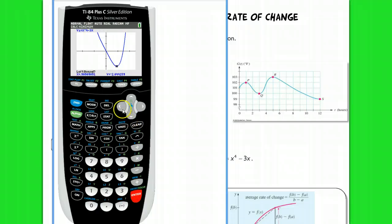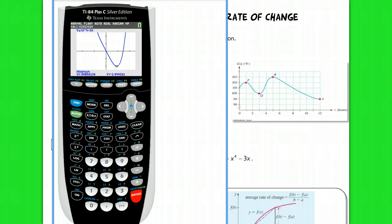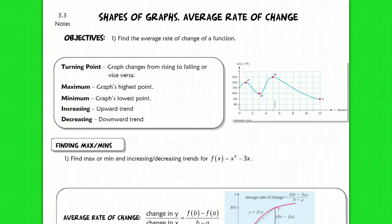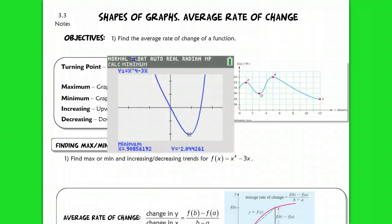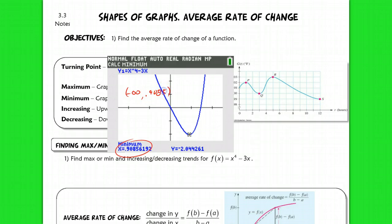Hit enter. When it asks you to go left bound, go left of that minimum point and hit enter. When it asks you to go right bound, go to the right and hit enter. Then guess — hit enter one more time — and your minimum appears. So we have a decreasing trend from negative infinity up to the minimum point, 0.9085, and an increasing trend from that same point, 0.9085, to positive infinity. This is where your graph is now increasing in values.